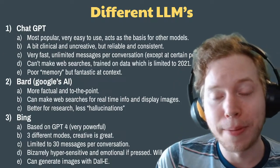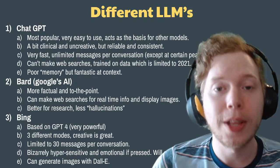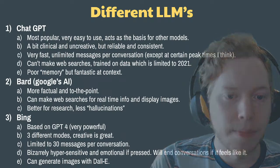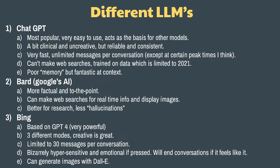Let's look at the different LLMs out there. I'll only cover the ones I've used and explored thoroughly — there are more than these three. ChatGPT is actually the basis of a lot of other LLMs, and it's kind of the core brain of many different models. It's the most popular, easy to use, very fast, and acts as a basis for other models. It's a bit clinical and uncreative but pretty reliable and consistent. There are unlimited messages per conversation, though at peak times it may limit you. The $20/month pro version has fewer limits. Its data set is trained on data limited to 2021, so it doesn't know anything since then, and it doesn't have great memory within a conversation — it can forget a rule five messages down the line.